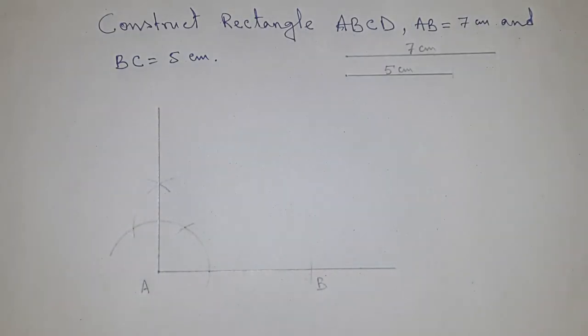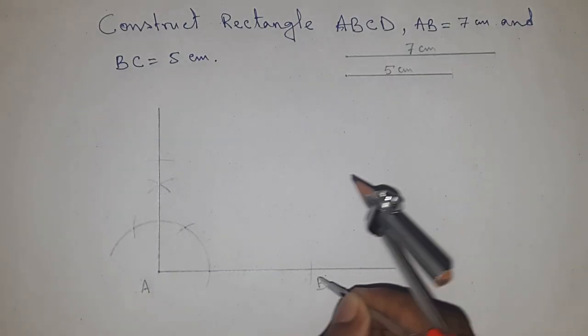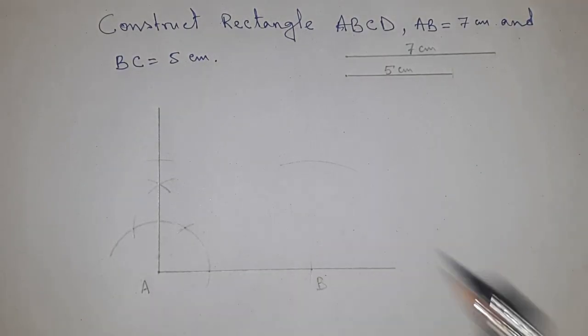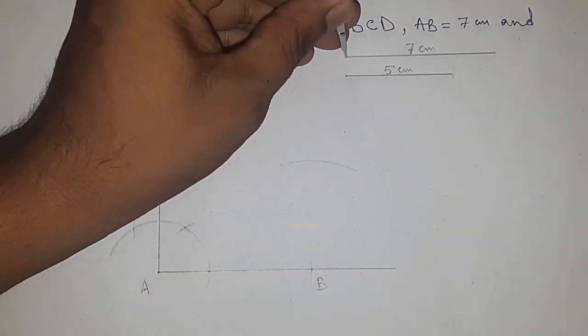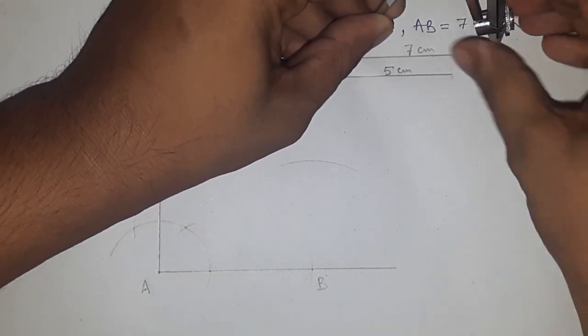Now take the length of the side 5 centimeters with the compass, put the compass here and cut the line. With the same length, put the compass here and draw an arc here also. Again, take the length of side AB with the compass.